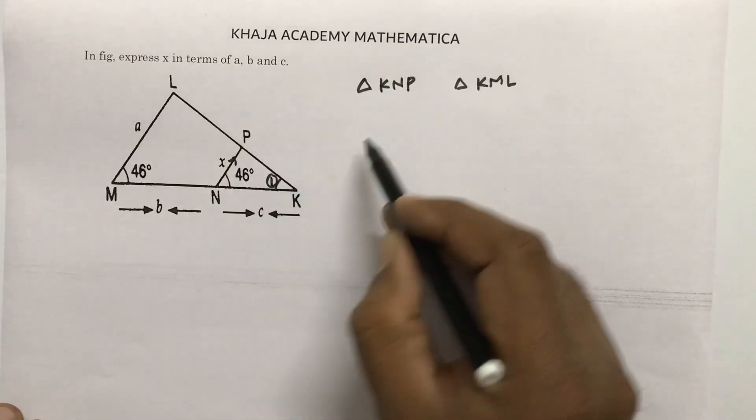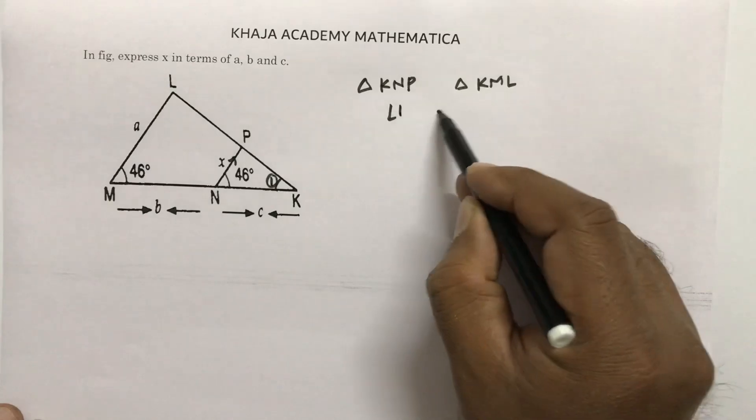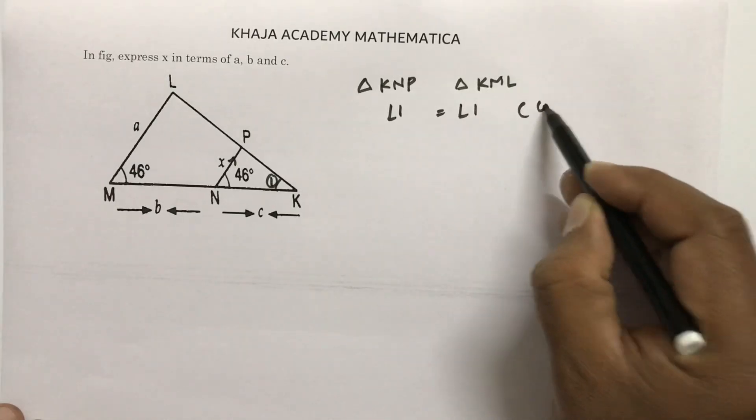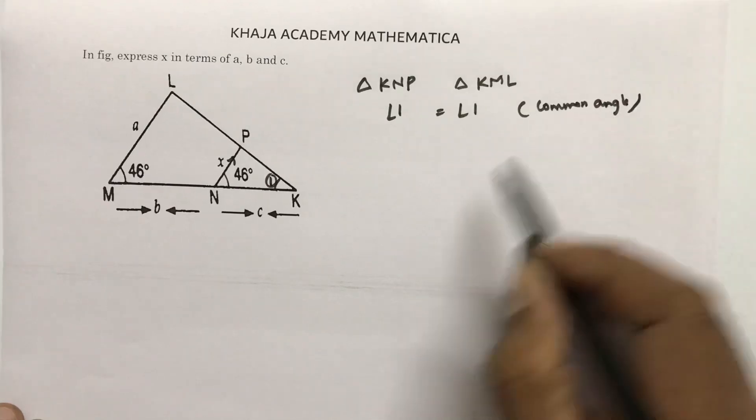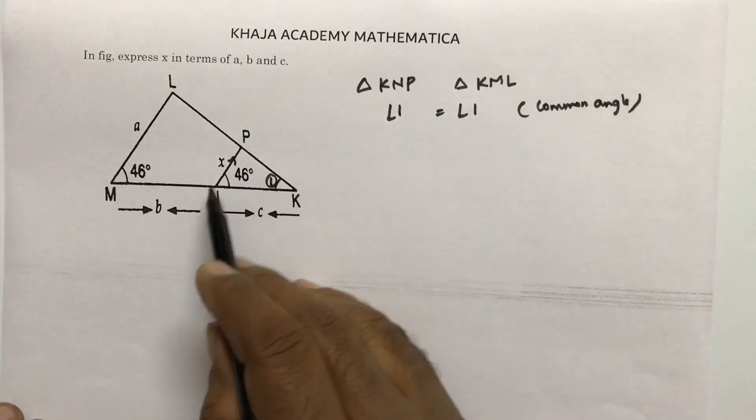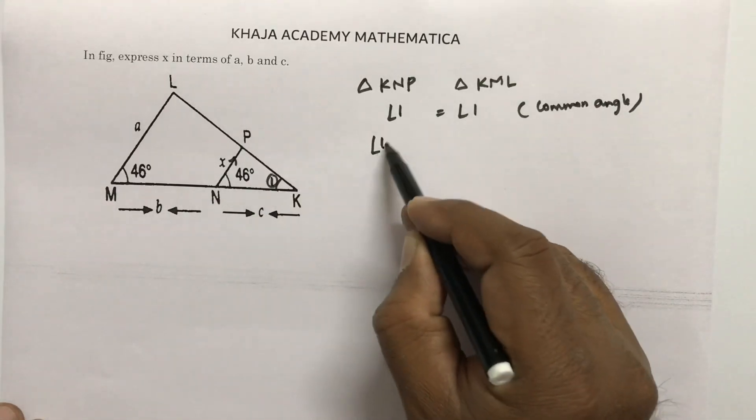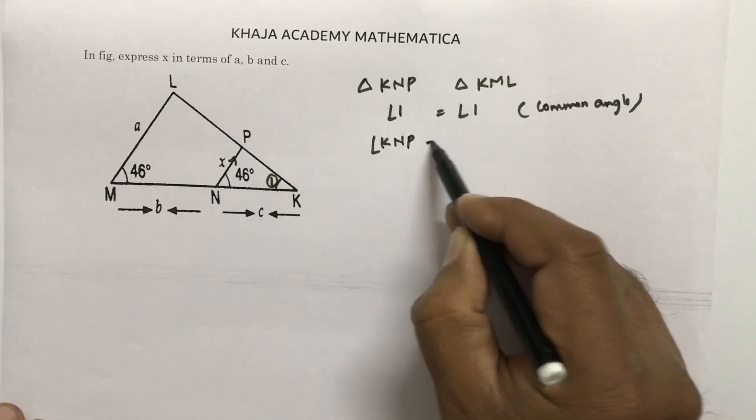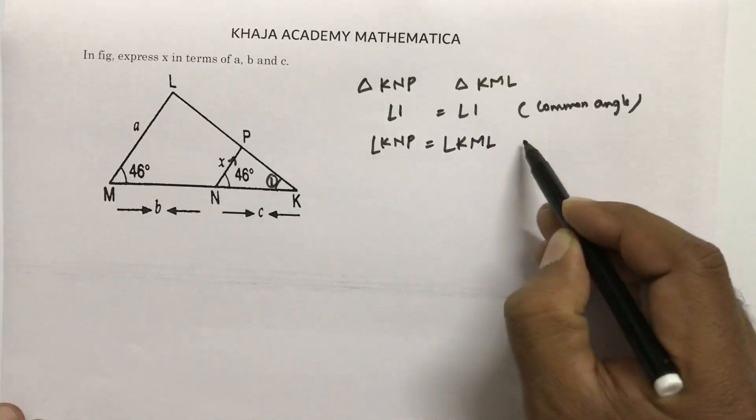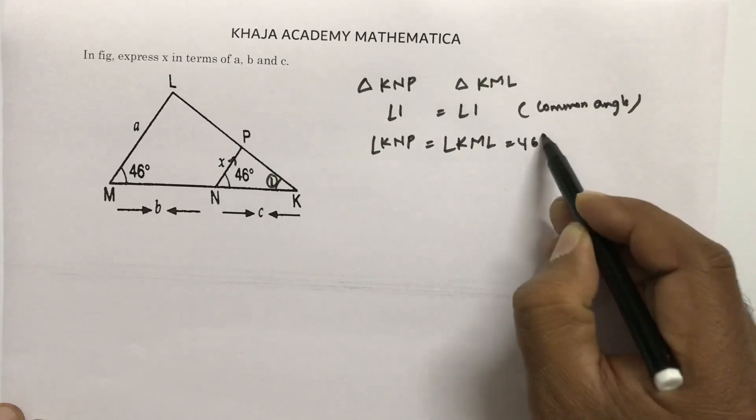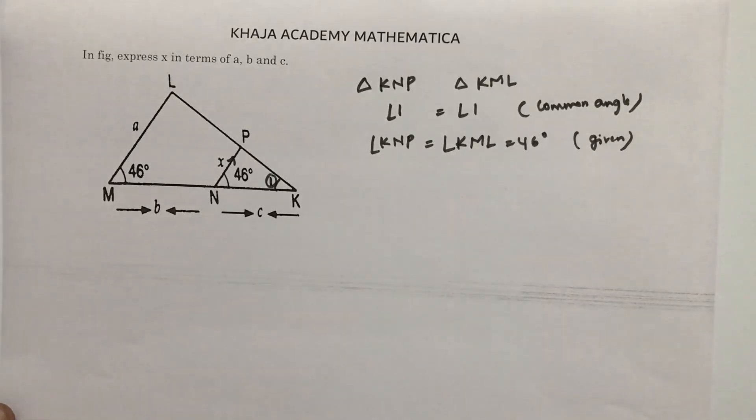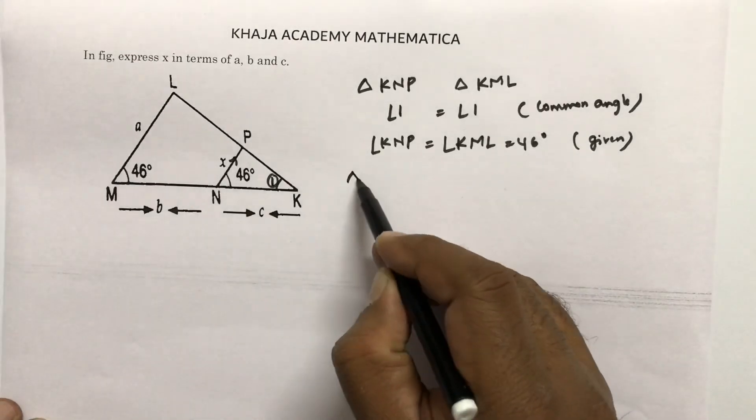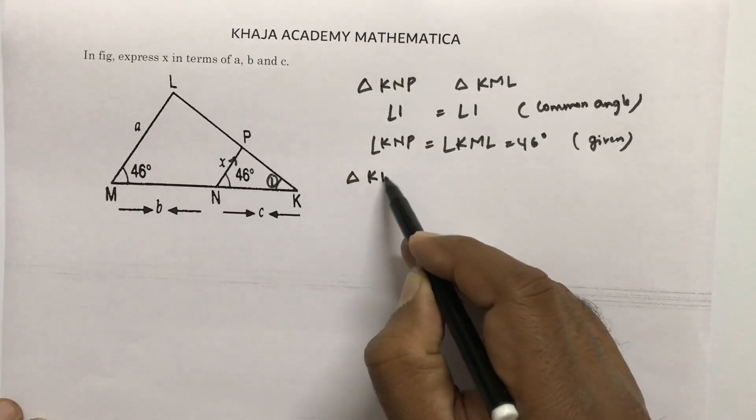We have angle one common—angle one equals angle one. Next, angle KNP is equal to angle KML, which is nothing but 46 degrees. It is given. So from this we can conclude that these two triangles are similar by angle-angle corollary.